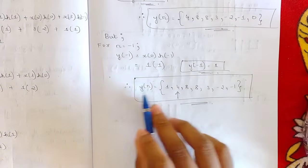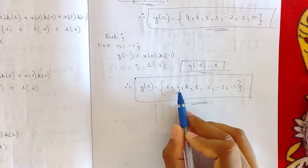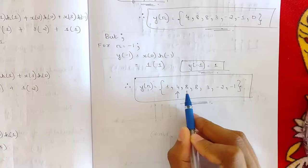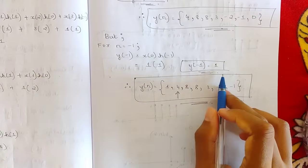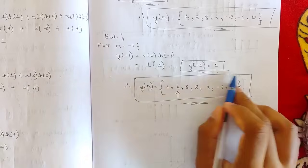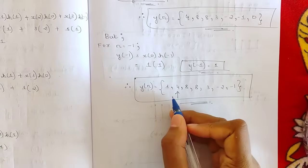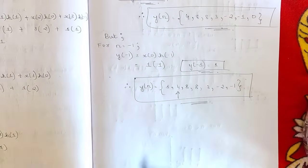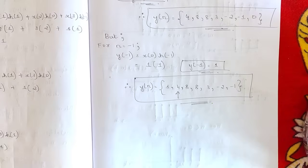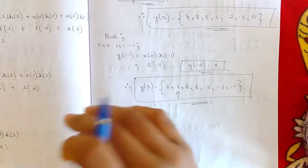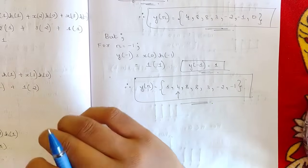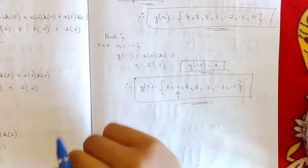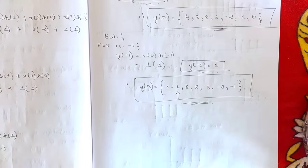Now writing all terms: Y[-1]=1, Y[0]=4, Y[1]=8, Y[2]=8, Y[3]=3, Y[4]=-2, Y[5]=1. The block length is 7 and the zeroth term is Y[0]=4. This is the required sequence Y[n]. This can also be solved by plotting graphs. This is one method to solve it — please note it down.